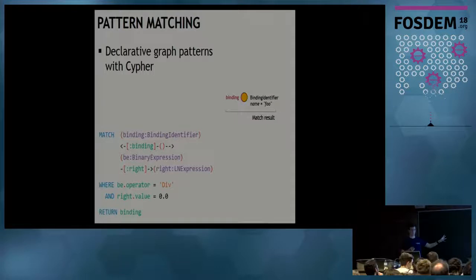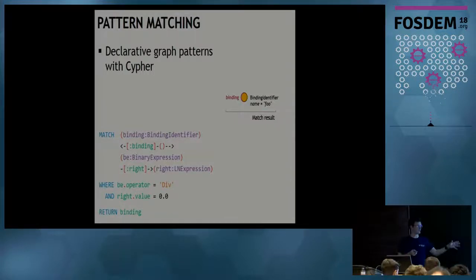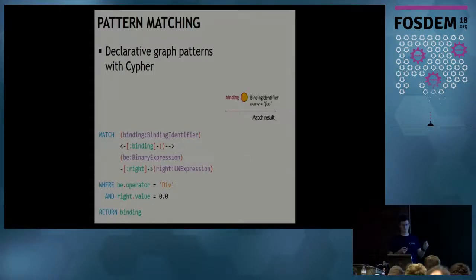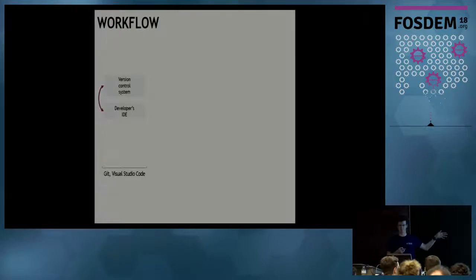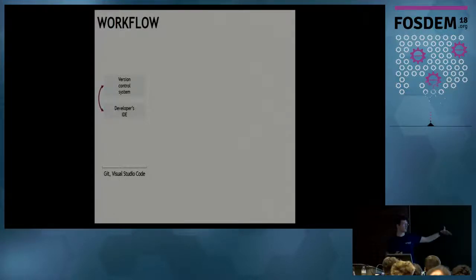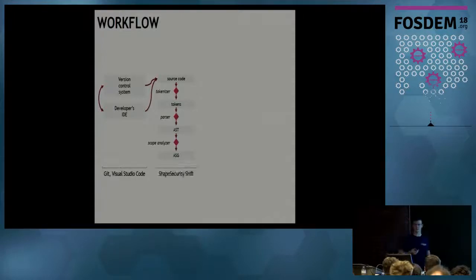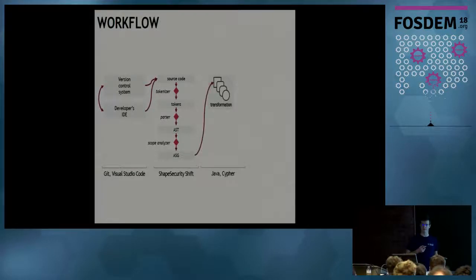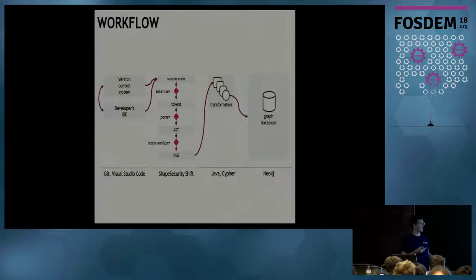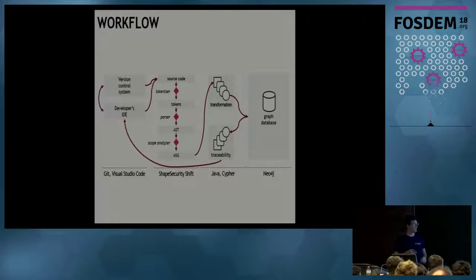Ideally we should give developers timely feedback on mistakes they've made. Workflow-wise, it starts with the developer's IDE and version control system. Code is loaded from the VCS and transformed to tokens, AST, and ASG step by step. It's then transformed by a set of Cypher queries and Java code, loaded to the graph database, and errors are traced back to the source code and displayed in the developer's IDE.